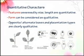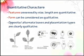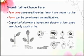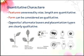Quantitative characters: features assessed by size and length are quantitative. Form can be considered as qualitative. The opposite and alternate leaves and placentation types are clearly qualitative.